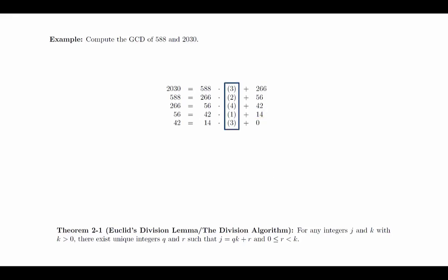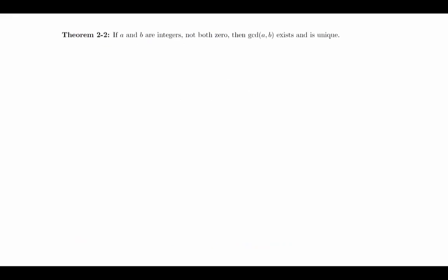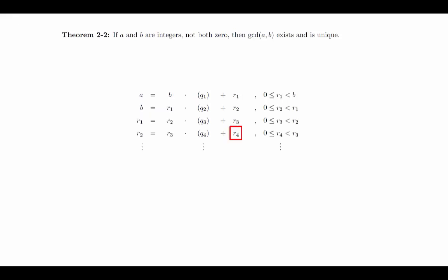The quotients have been put inside the parentheses for emphasis. Theorem: If a and b are integers, not both 0, then the GCD of a and b exists and is unique. We will develop the Euclidean algorithm in the process of proving this theorem. Without loss of generality, we will suppose that a and b are positive integers with a greater than or equal to b. We will use the division algorithm to divide a by b. If r sub 1 is greater than 0, then we apply the division algorithm again, dividing the previous dividend by the previous remainder. We can keep doing this as long as the remainder is positive. Notice that the remainders form a strictly decreasing sequence of non-negative integers. Eventually, we will run out of positive integers and the remainder will be 0. We will let r sub n be the last non-zero remainder.